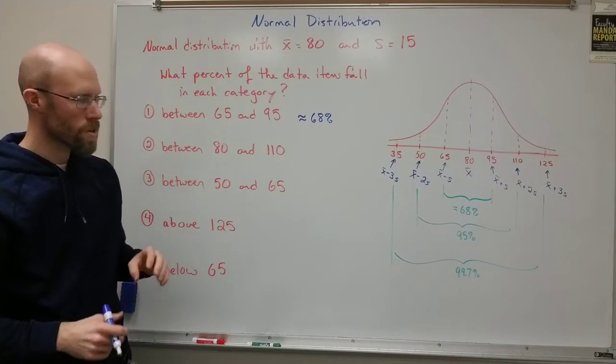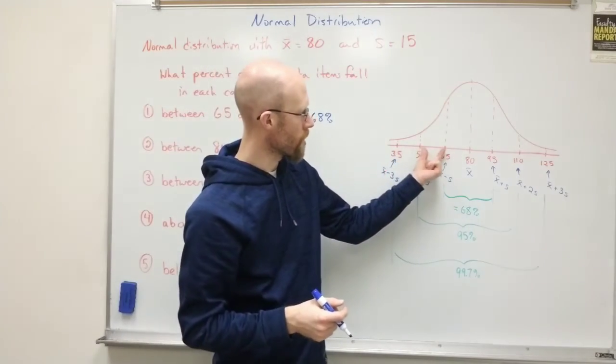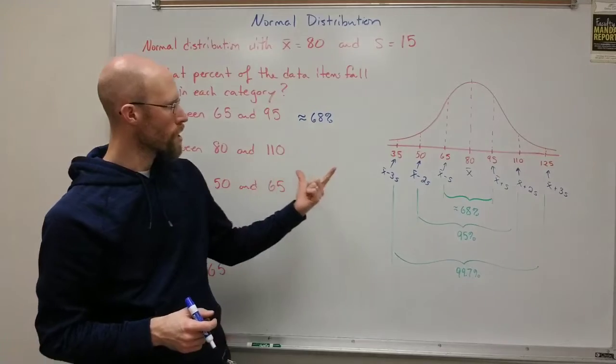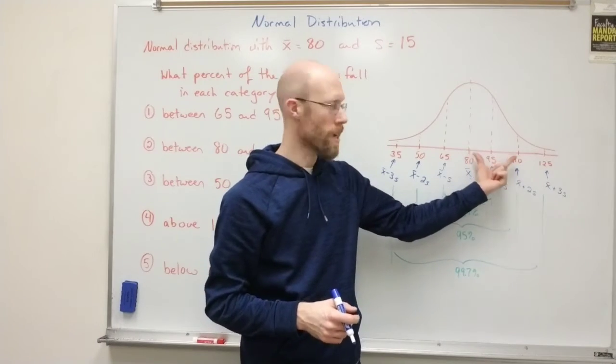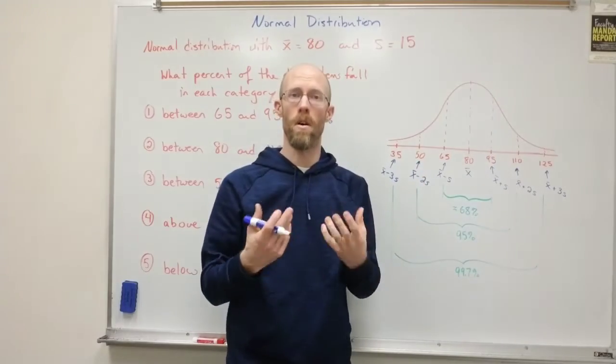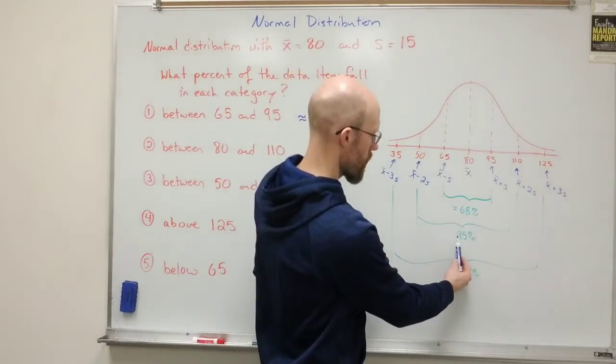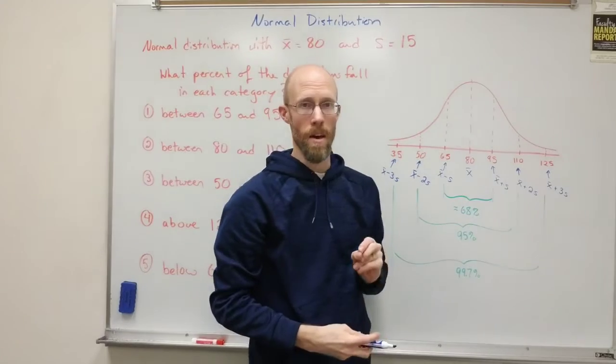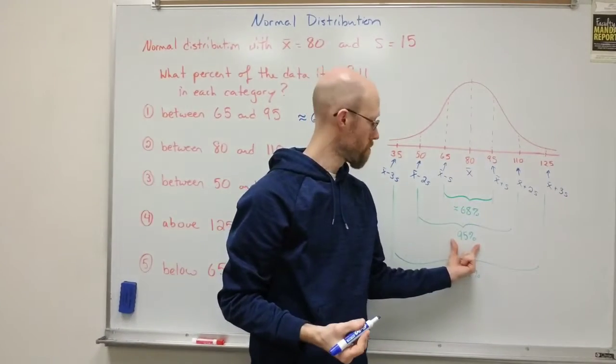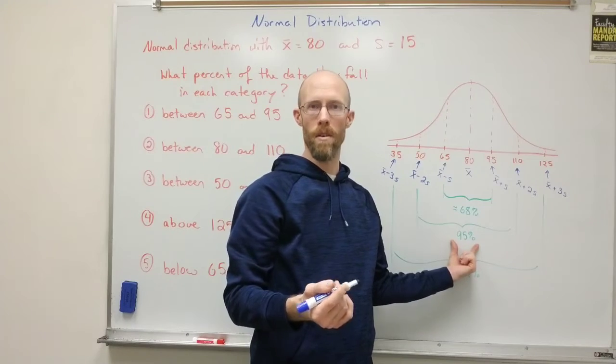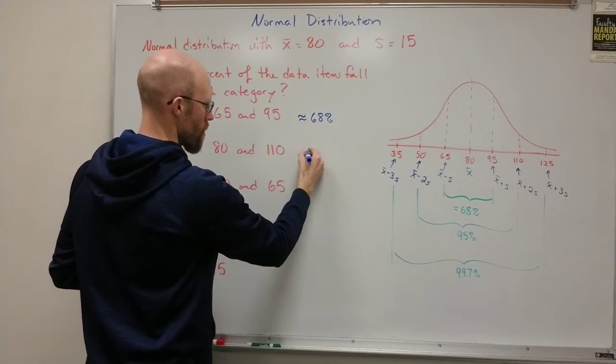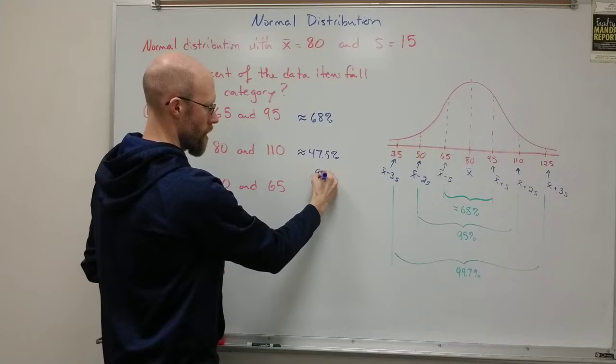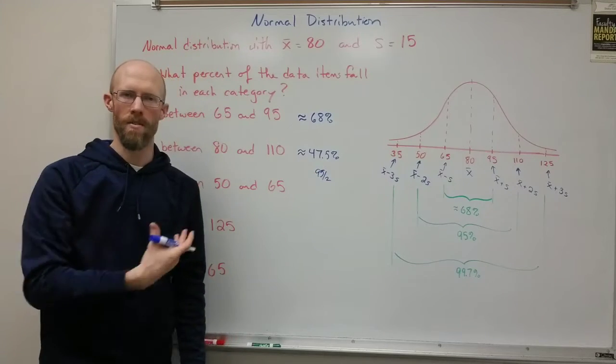Between 80 and 110. Now, this is where it gets a little bit tricky because we're going to have to start thinking about these as individual slices of the distribution. So between 80 and 110, we're looking at the right-hand side of two standard deviations. We'll have to assume there's symmetry here as well. So if 95% fall between two standard deviations, half of that will be to the right and half of that will be to the left. So what's half of 95? 47.5. So approximately 47.5%. So that's 95 over two, essentially.